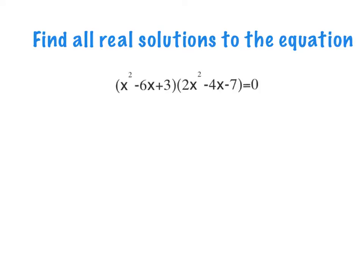That was pretty straightforward — it's not always going to be that simple. Here's another example: find all real solutions. Let's underline the word 'real,' because sometimes we're going to get solutions that are imaginary, and we'll talk about those later. The first thing that jumps in my head is to factor, but right away I notice the only thing that multiplies to 3 is 3 and 1, and 3 and 1 can never add to make 6. So this one cannot be factored.